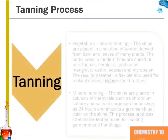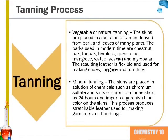There are two different methods for tanning. Vegetable or natural tanning involves the skins being placed in a solution of tannin derived from barks and trees from many different plants. The resulting leather is flexible and is often used for making shoes, luggage, and furniture. The second method is mineral tanning, where the skins are placed in a solution of chemicals such as chromium sulfite and salts of chromium for as short as 24 hours. The process imparts a greenish-blue color to the skins because of the chromium, and produces stretchable leather used for making garments and handbags.